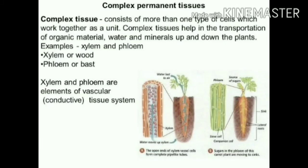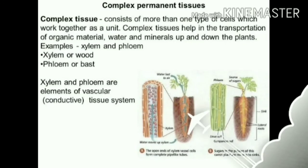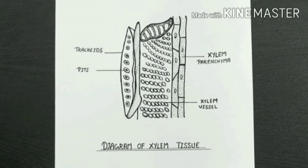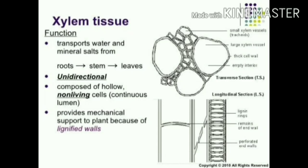Xylem consists of tracheids, vessels, xylem parenchyma, and xylem fibers. The cells have thick walls and many of them are dead cells. Tracheids and vessels are tubular structures that allow them to transport water and minerals vertically. The parenchyma stores food and helps in the sideways conduction of water. Fibers are mainly supportive in function.